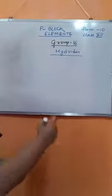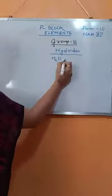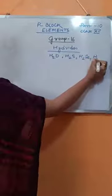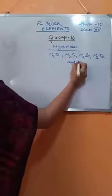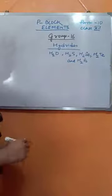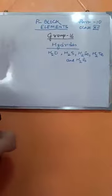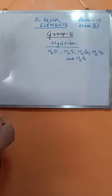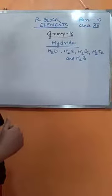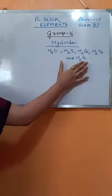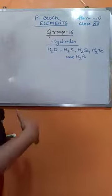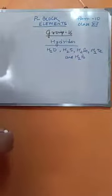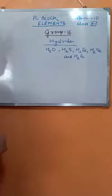The hydrides of Group 16 are H₂O, H₂S, H₂Se, H₂Te, and H₂Po. The hydrate with polonium is not mentioned in all the properties because polonium is basically a radioactive element. So, the hydrides of Group 16 elements are all covalent in nature.